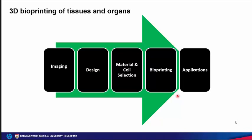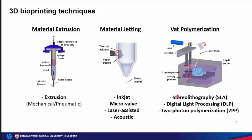For the cell source, selected cells should be able to expand into sufficient numbers for bioprinting, and should consist of multiple cell types such as functional and supportive cells. In the subsequent sections, I'll elaborate more on the various bioprinting techniques and their different applications.